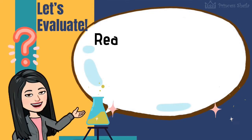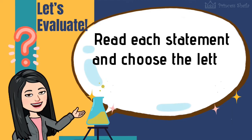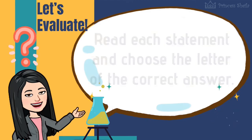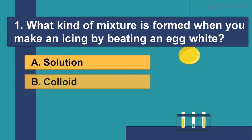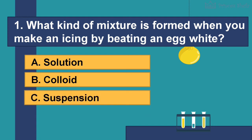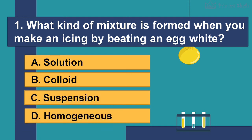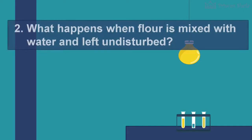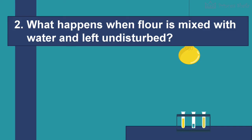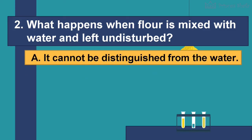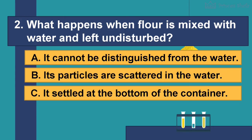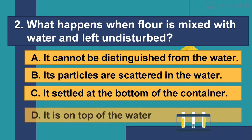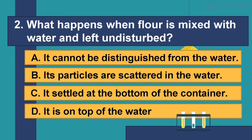Now let me see if you understood the lesson. Read each statement and choose the letter of the correct answer. Number 1: What kind of mixture is formed when you make icing by beating egg white? A — solution, B — colloid, C — suspension, D — homogeneous. Number 2: What happens when flour is mixed with water and left undisturbed? A — it cannot be distinguished from the water, B — its particles are scattered in the water, C — it settles at the bottom of the container, D — it is on top of the water.